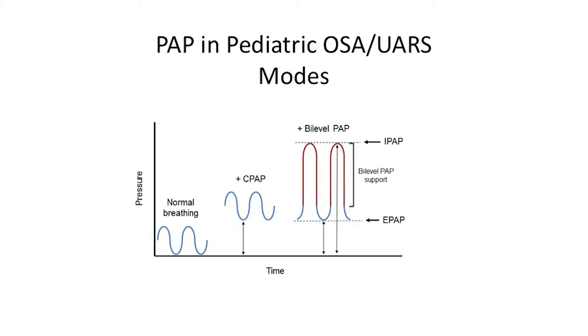CPAP delivers slightly higher inhalation pressure, fluctuating between inspiration and expiration by about 2 to 3 centimeters of water pressure. In BiPAP, this pressure difference is higher — custom-set, ranging from 4 all the way up to 6 or 9 centimeters — designed to ventilate a child who has hypoventilation and is retaining CO2 with every breath. BiPAP is for them.